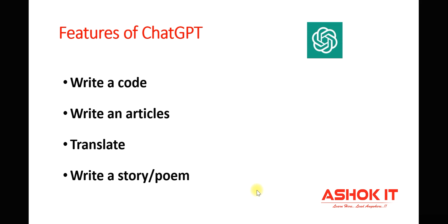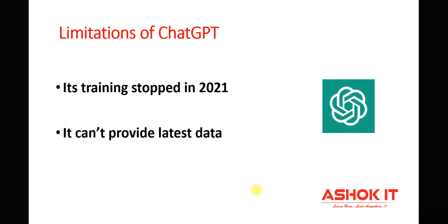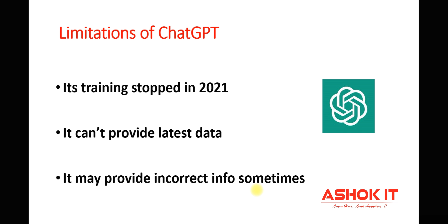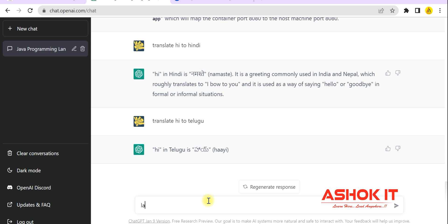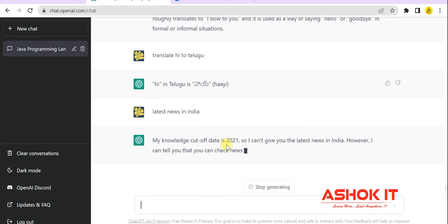There are several advantages to ChatGPT — writing code, getting technical information, translation, writing stories and poems. But there are some limitations too. ChatGPT's training stopped in 2021, so it does not know events after 2021 and cannot provide the latest data. For example, when I asked for the latest news in India, it told me that its knowledge cutoff date is 2021 and it cannot provide that.